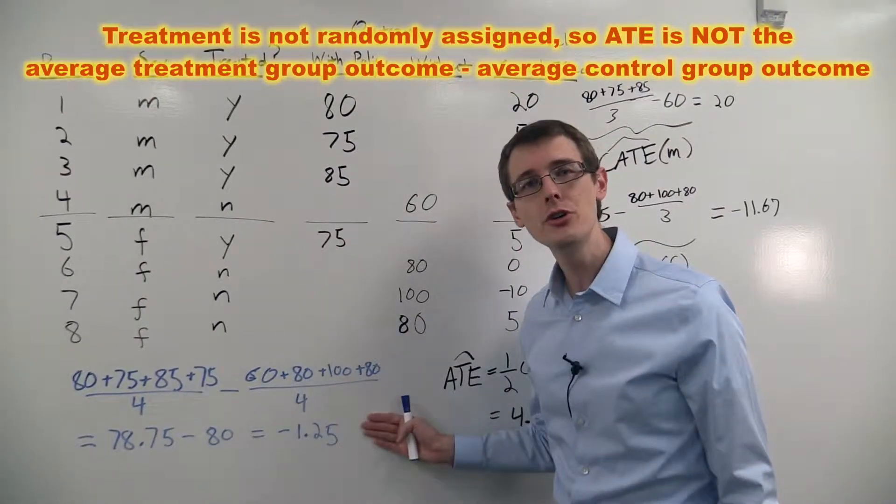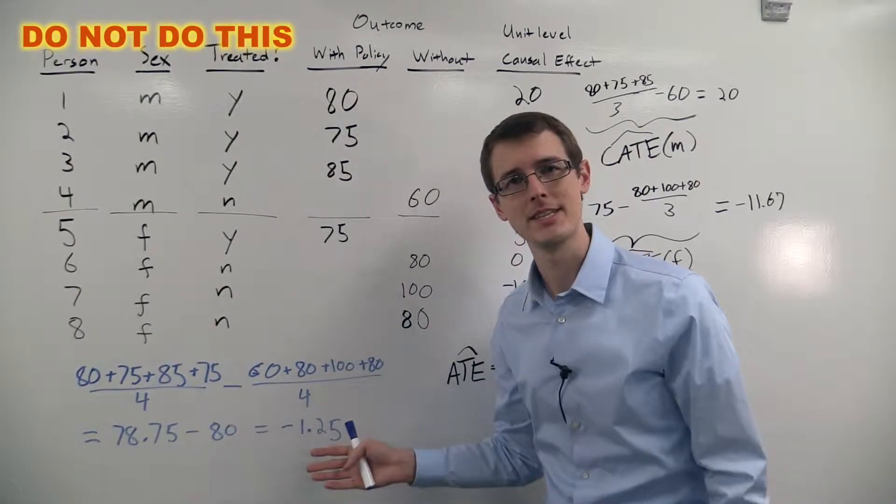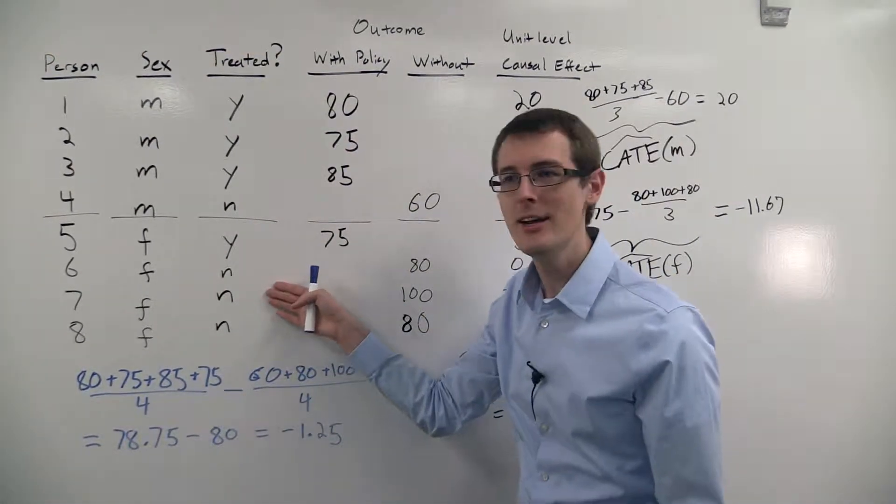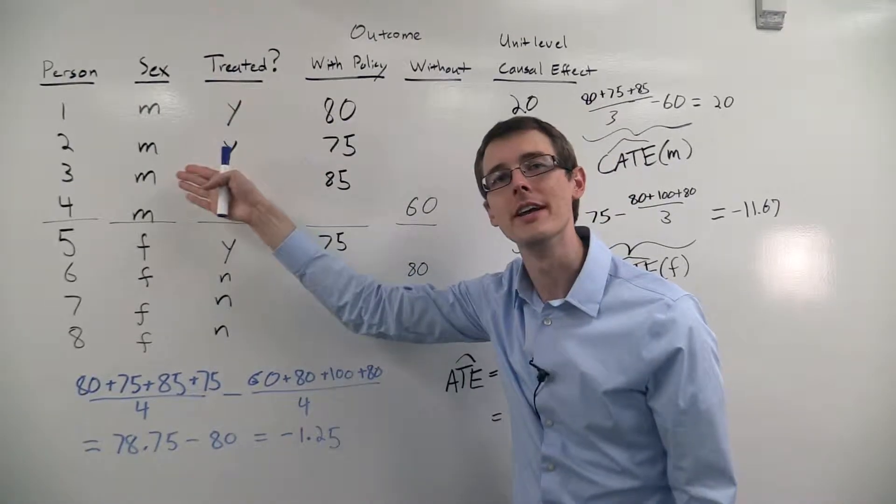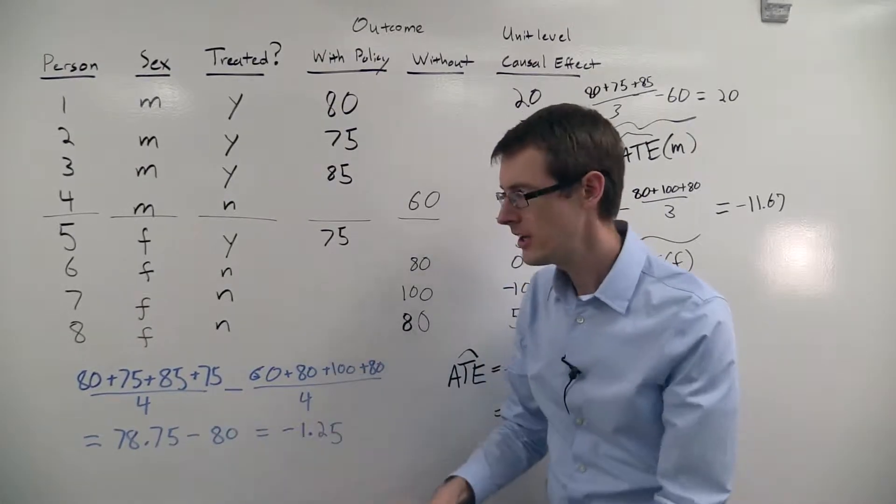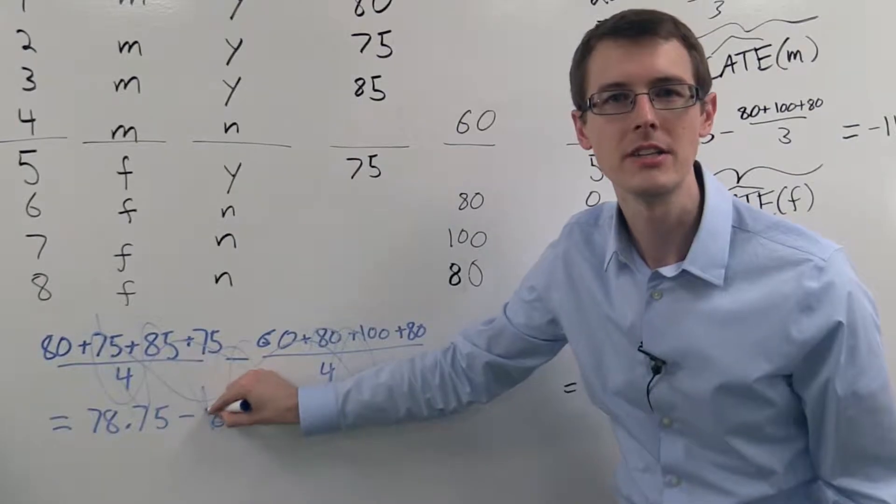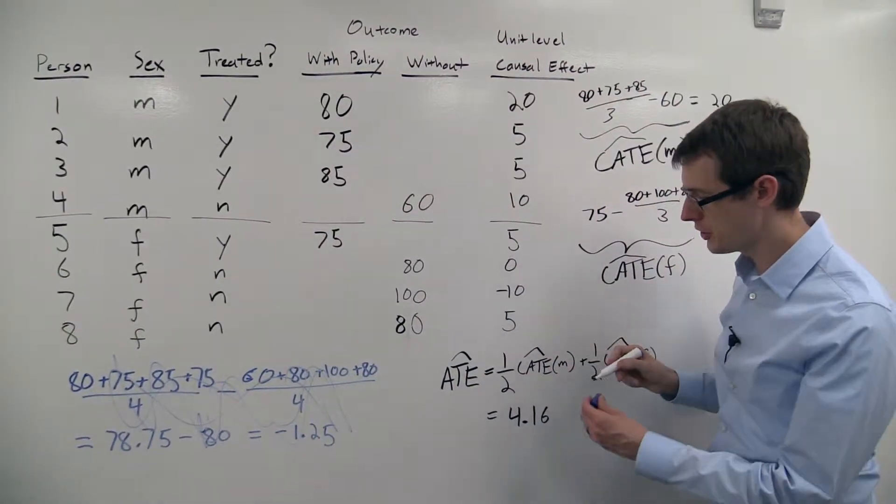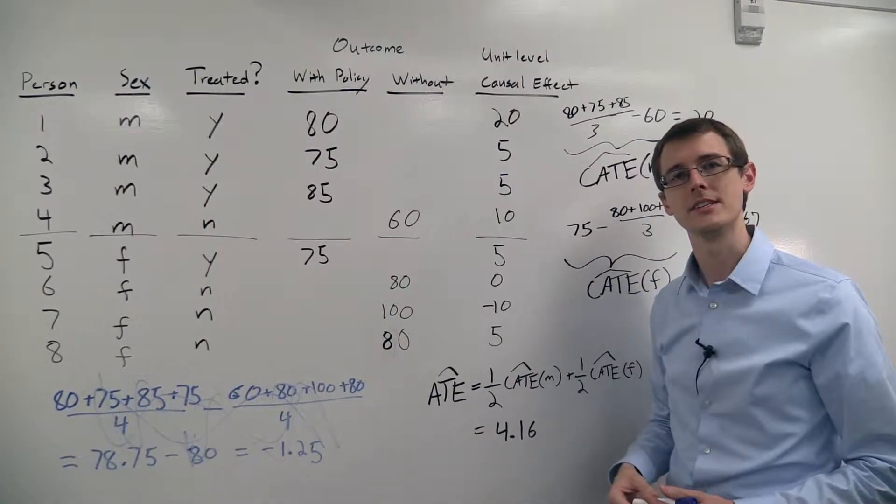But this is not what you should do, because remember, this is what you do when treatment is randomly assigned, but here it's not. It seems to be correlated with gender. Men are more likely to get treated. So this is not getting you the actual average treatment effect. You should not do this. Do not do this. It's wrong. This is what you should do instead if you're going to do an analysis based on the unconfoundedness assumption.